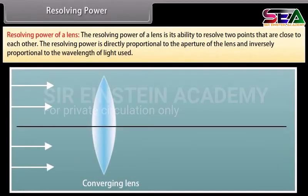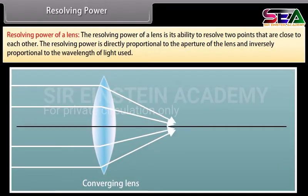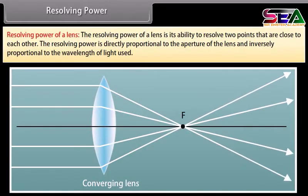Resolving power of a lens. The resolving power of a lens is its ability to resolve two points that are close to each other. The resolving power is directly proportional to the aperture of the lens and inversely proportional to the wavelength of light used.